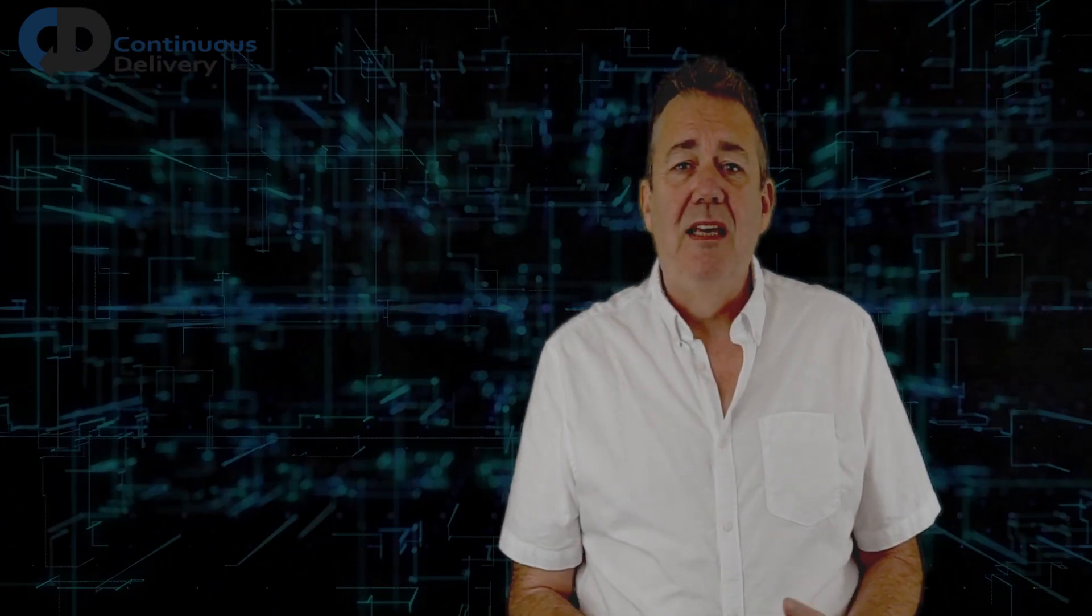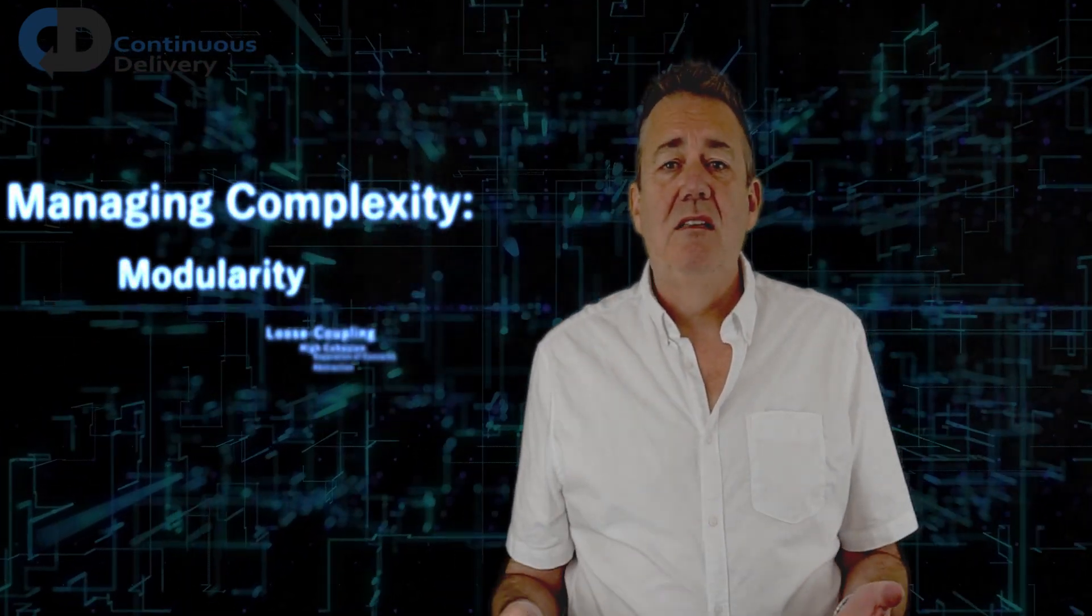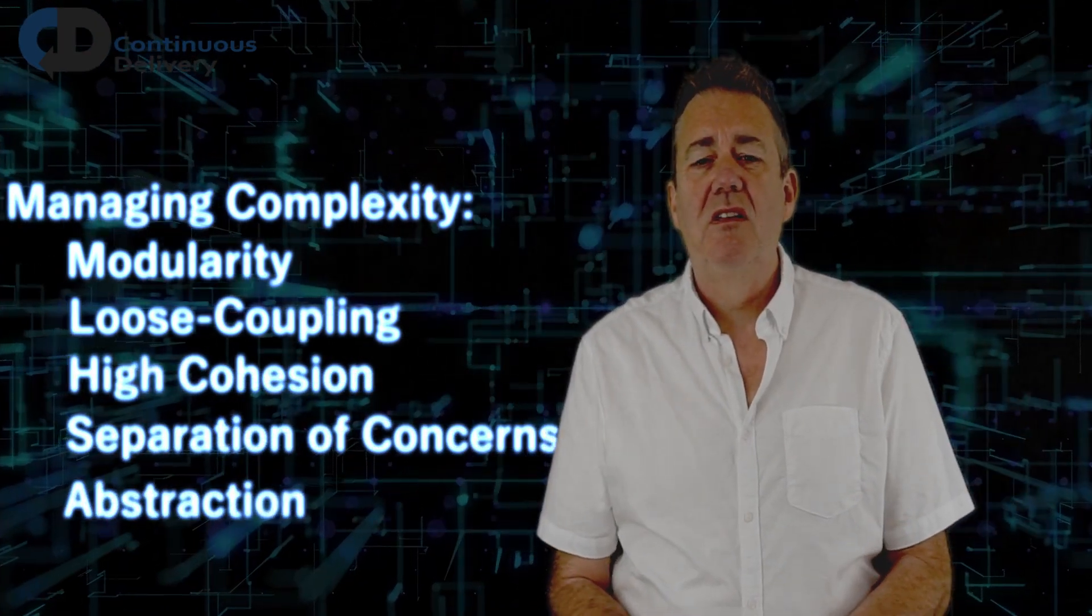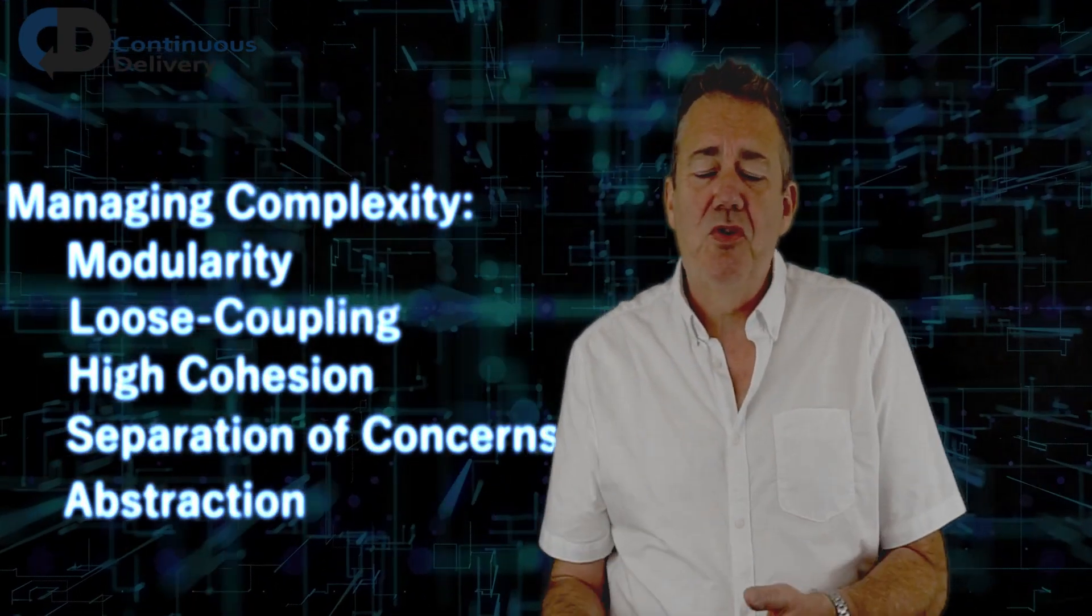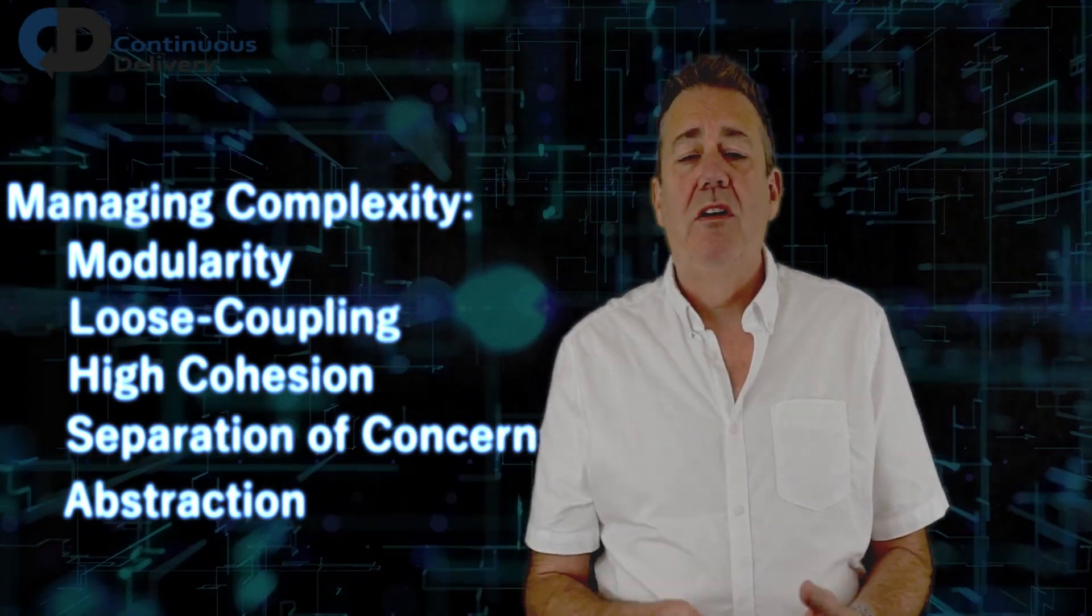In order to manage complexity, that's a different kind of stuff, but it's related. We need to think in terms of modularity, loose coupling, high cohesion, separation of concerns, information hiding or abstraction in order to be able to compartmentalize the systems that we create and work on them efficiently.